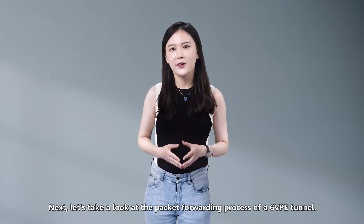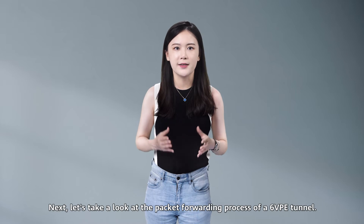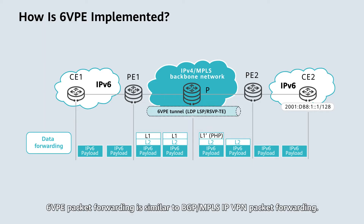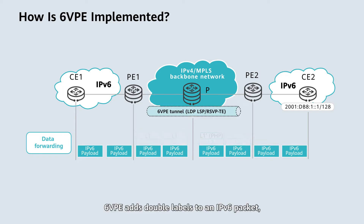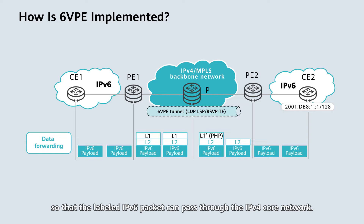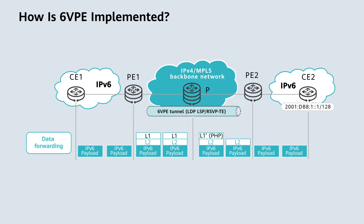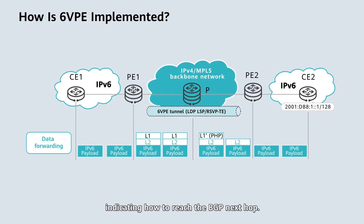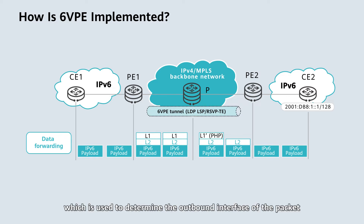Next, let's take a look at the packet forwarding process of a 6VPE tunnel. 6VPE packet forwarding is similar to BGP/MPLS IP VPN packet forwarding. 6VPE adds double labels to an IPv6 packet so that the labeled IPv6 packet can pass through the IPv4 core network. The outer label is an MPLS tunnel label, indicating how to reach the BGP next hop. The inner label is a VPN IPv6 label, which is used to determine the outbound interface of the packet and the VPN to which the packet belongs.